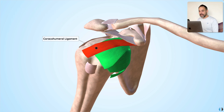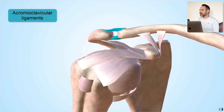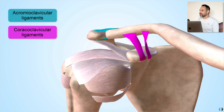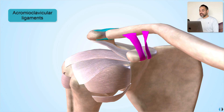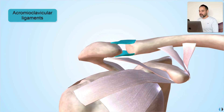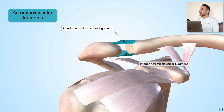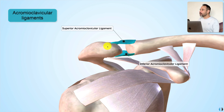Moving on, we look at the acromioclavicular ligaments. These stabilize the AC joint, the acromioclavicular joint. We have two of these: a superior acromioclavicular ligament and an inferior acromioclavicular ligament, which connect the acromion to the clavicle, or the collarbone. We also have the coracoclavicular ligaments, which have a similar role in stabilizing this AC joint too.